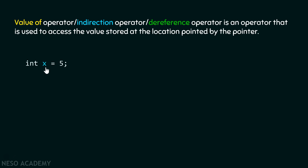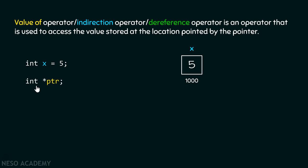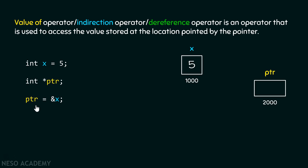Suppose I have a variable x which stores value 5. Here is the pictorial representation of this variable x. I also have a pointer which points to some integer value, as indicated by its data type, and here is its pictorial representation. With this statement, I am assigning the address of variable x to this pointer variable. The address of variable x is 1000, so 1000 will get stored inside this pointer variable.